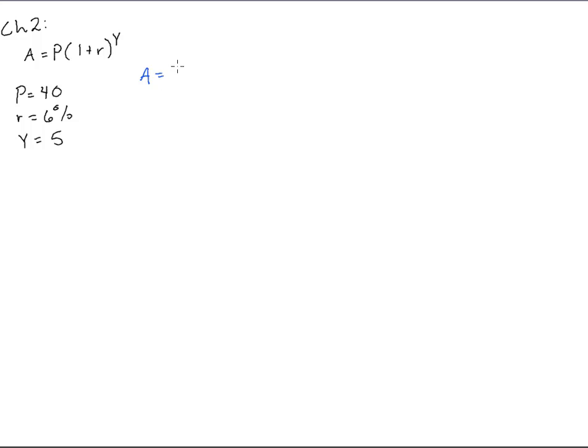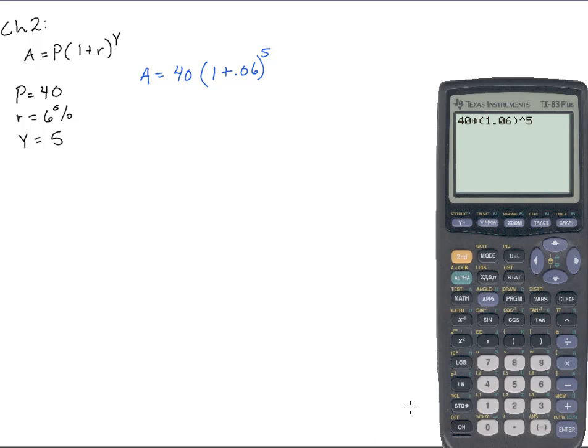When we have the amount equals, we would have $40, 1 plus .06, and that would all be 5 years. And we got out our calculator and we said, let's punch that in, 40 times 1.06, all to the 5th power, and we hit enter.